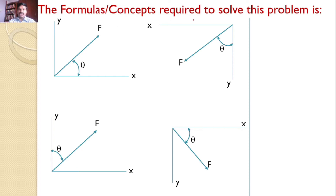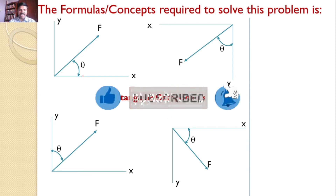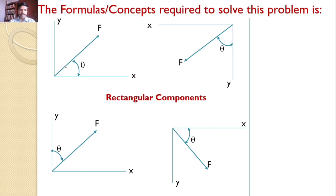The concept required to solve this problem is rectangular components. Any force F can be resolved into two different forces. If the angle between those two forces is 90 degrees, then it is called rectangular components of forces. Consider a force F making an angle theta with the horizontal. You can resolve this force into two components: one force along the x-axis and another force along the y-axis. Since the angle between x and y-axis is 90 degrees, these are rectangular components.